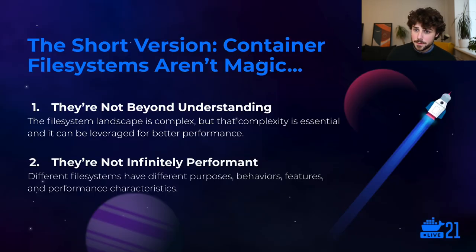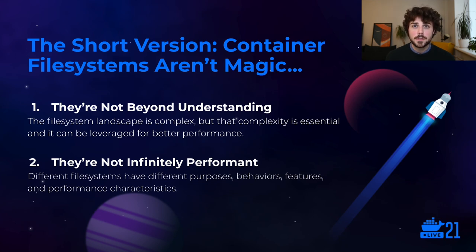The short version of this talk is that container file systems aren't magic, and I mean that in two different ways. First, they're not so complex that you can't understand them — they're actually fairly simple and most of the complexity is essential to support the container abstraction. The second way is that they're not infinitely performant. You can't just take a bind mount and expect that to solve all of your use cases with development work. It's really important to understand the entirety of that landscape, what the roles of all those file systems are, and how you can leverage them for the best performance.